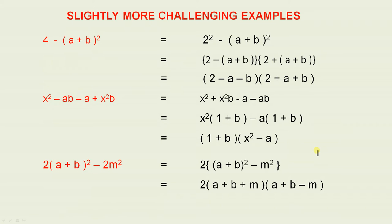Some slightly more challenging examples. If we're asked to factorize 4 minus (a + b)². Now 4 is 2². So that's 2² minus (a + b)². So this is in the same format as a² minus b².